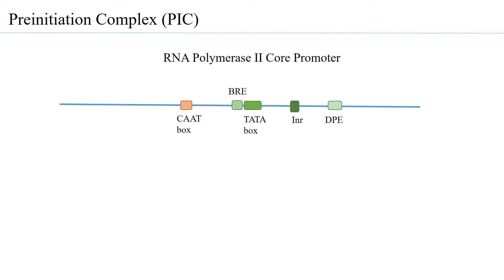Some of these cis-acting elements are called the promoter proximal elements, located from around minus 70 to minus 200 upstream of the TATA box. One is called the CAAT box and the other is called the GC box; both form the promoter proximal elements. Even beyond that, very far from all of these cis-acting elements, are what are called the distal regulatory elements.